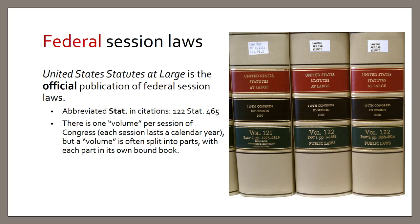Pictured here are several volumes of the Statutes at Large. You might notice that volume 122 is split across two books. This is a little confusing since we often call an individual book a volume, but here the volume number is used for the entire second session of the 110th Congress, which occurred in 2008. The amount of legislation enacted during that session was too much to bind in a single book, so the publisher splits it into volume 122 part 1 and volume 122 part 2.